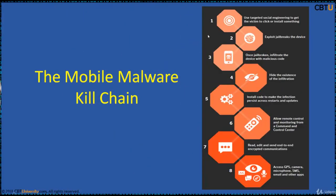This is the mobile malware kill chain. For a remote mobile attack, it all starts with social engineering to get the victim to click or install something. Then exploiting to jailbreak the device, infiltrate the device with malicious code, hide the existence of the infiltration, install the code to make the infection persist across restarts, retain access, allow remote control and monitoring, read and edit send-to-end encrypted communication, and access GPS, camera, microphone, SMS, email and other apps.